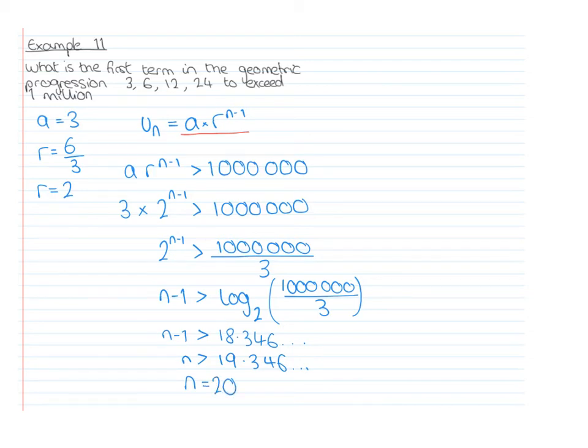We can do a quick and straightforward check of this. What is the 19th term? That's A times R to the power 18, so 3 times 2 to the power 18.